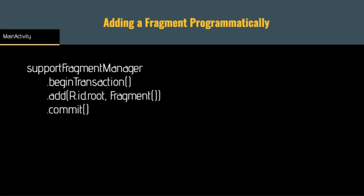We could also add a fragment programmatically, demonstrating both the fragment manager and fragment transaction. Within main activity, we get a reference to the support fragment manager, then call begin transaction. Everything after begin transaction defines that individual transaction — in this case, adding a fragment to a container with ID root. Fragments must be added to some type of view group, just like any other view. Once defined, we call commit to process the transaction and start adding or removing fragments.